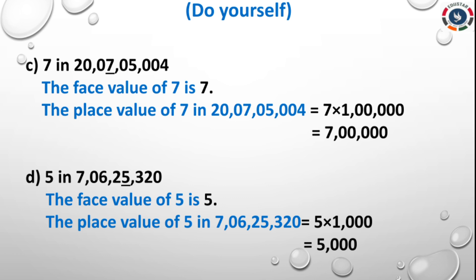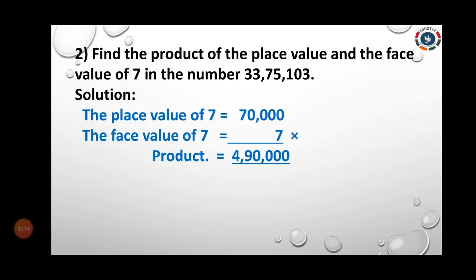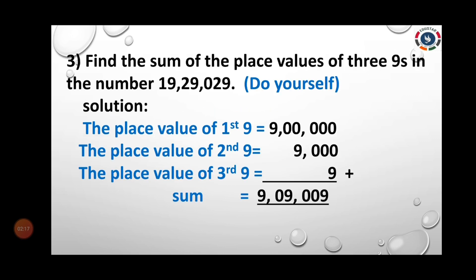D: 5 in 7,60,06,25,320 — 5 is in the 1,000 place, so 5 × 1,000 = 5,000. Then Domulator 6 — answer the following questions. I gave the answer for the 1st and 2nd sums, and the 3rd one you did yourself. Check your answer.